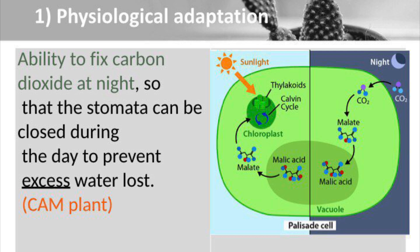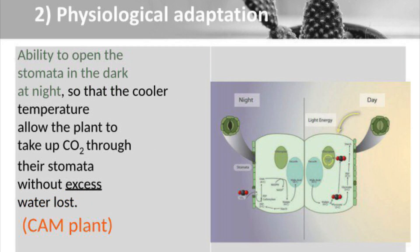Now comes physiological adaptations. The first is the ability to fix carbon dioxide at night so that the stomata can be closed during the day to prevent excess water loss, which can be seen in CAM plants. The second physiological adaptation is the ability to open the stomata in the dark at night so that cooler temperatures allow the plant to take up carbon dioxide through the stomata without excess water loss, also seen in CAM plants.